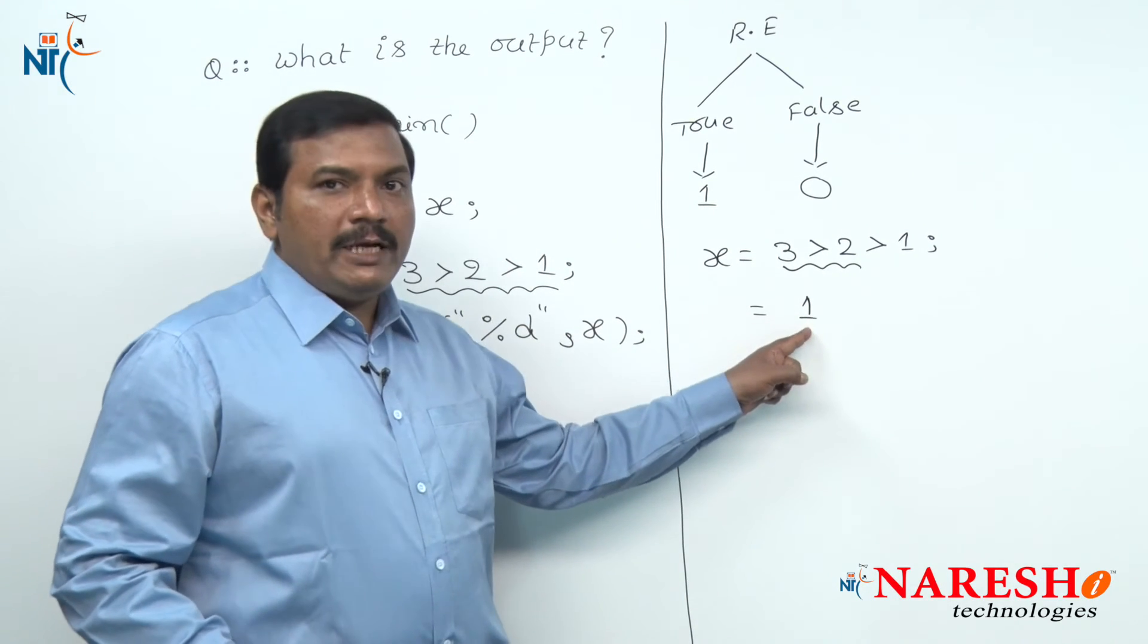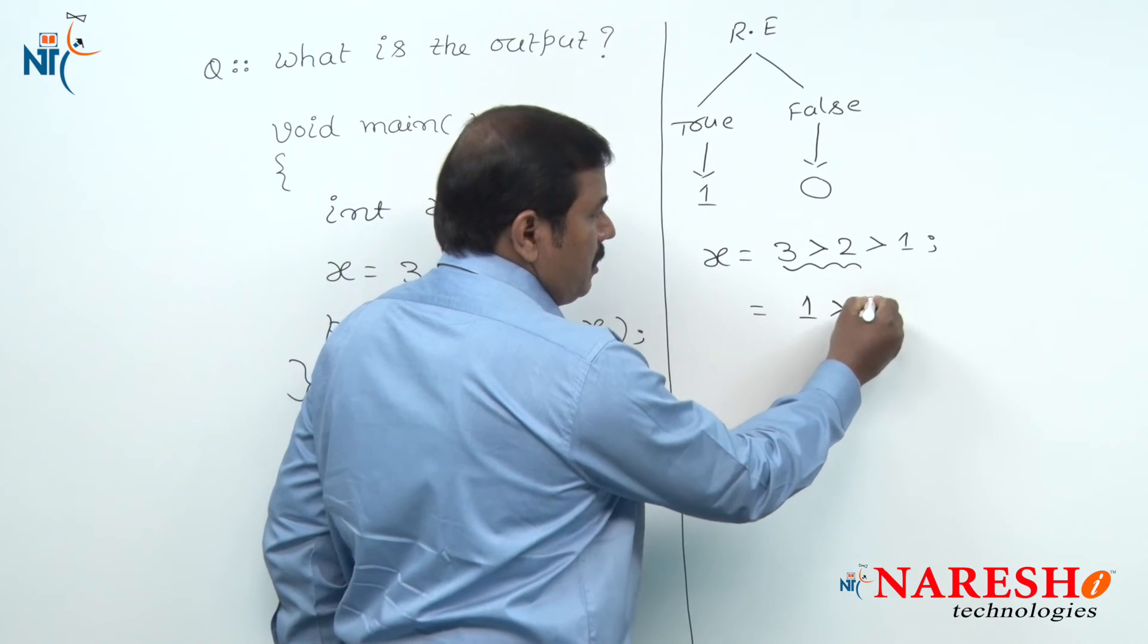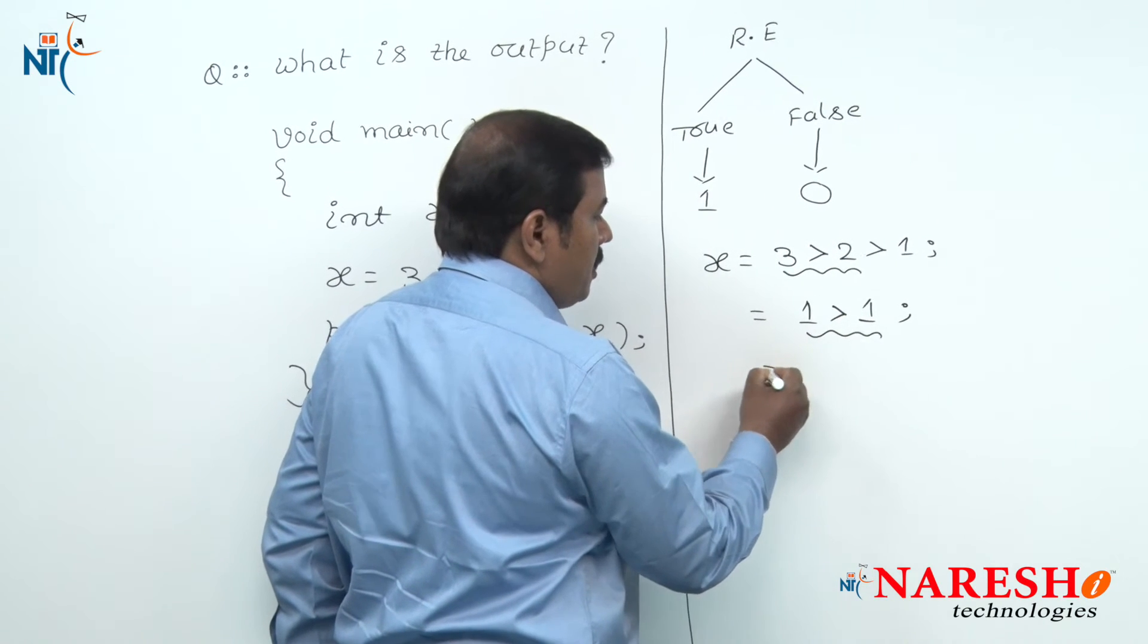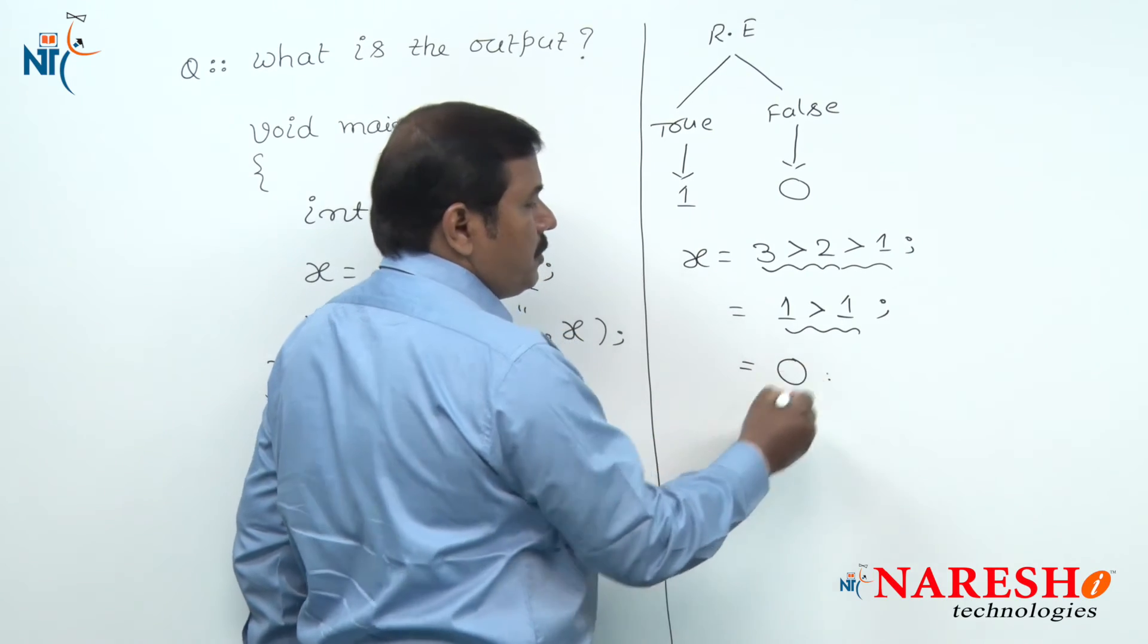The obtained value 1 is compared with the value 1. 1 is greater than 1 is false. Hence, the value of this overall relational expression is 0.